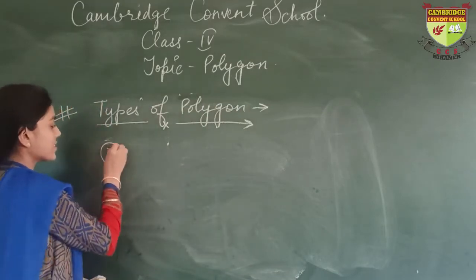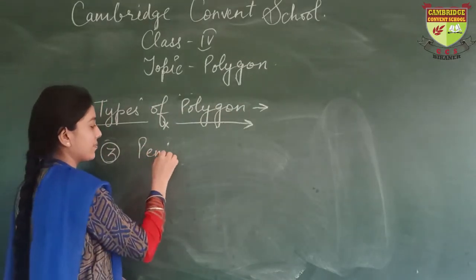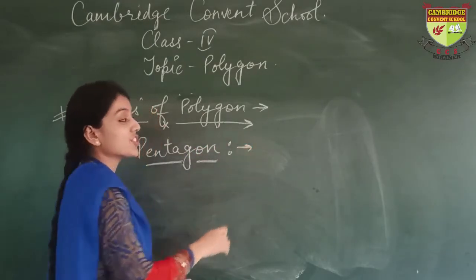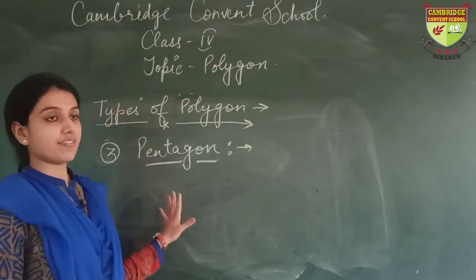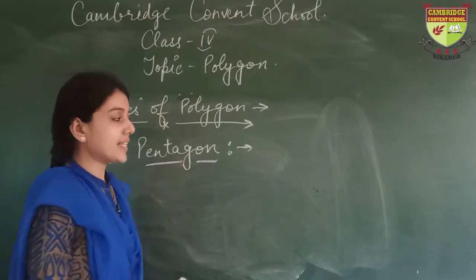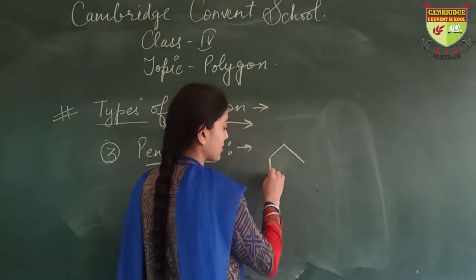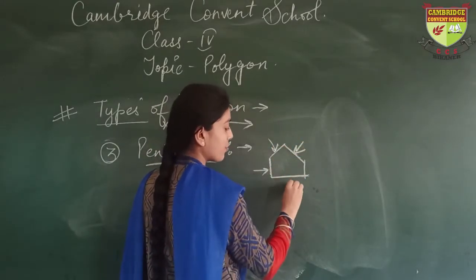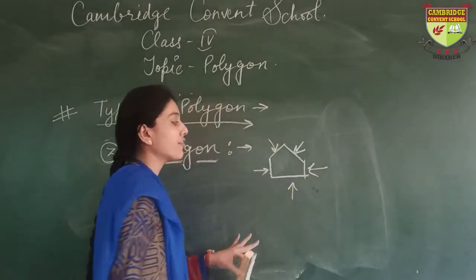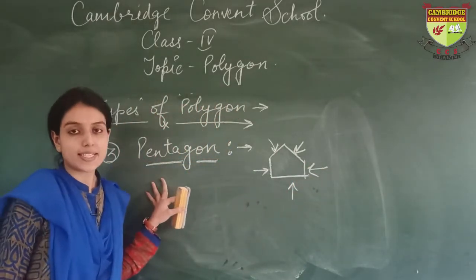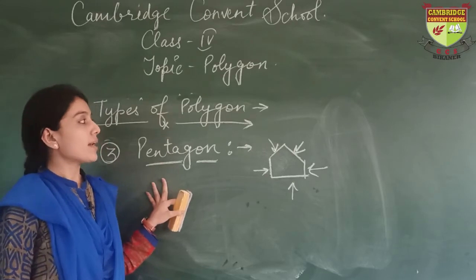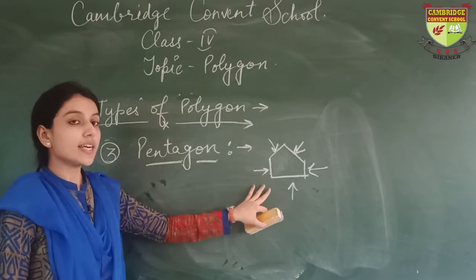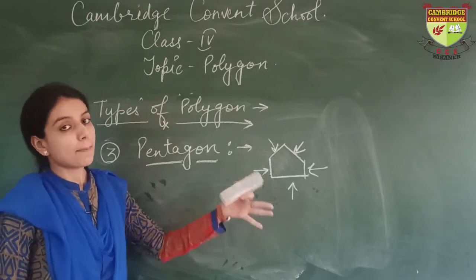The third type is pentagon. Any figure which has 5 sides is known as a pentagon. Here the sides are 1, 2, 3, 4, and 5. Polygons are named according to their sides, so 5 sides is known as pentagon.